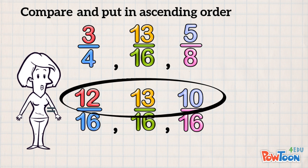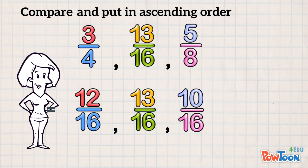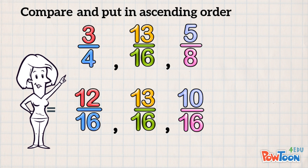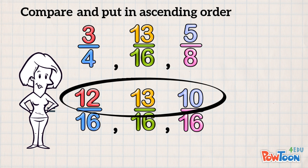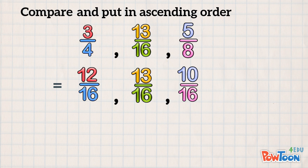How easy is that to compare them now? We have to rewrite the original fractions in order from smallest to largest. We use our equivalent fractions to tell us what the order is. Smallest was 10 sixteenths. That's 5 eighths. So we write that first.